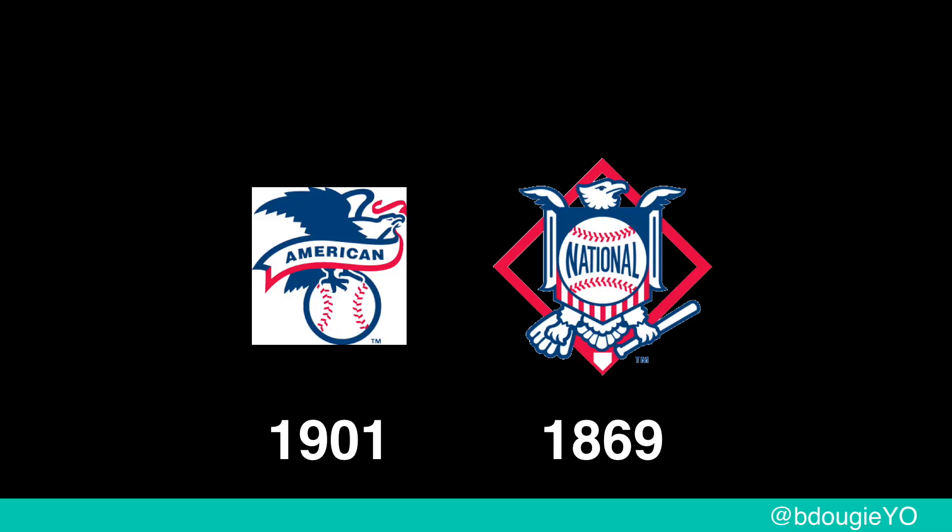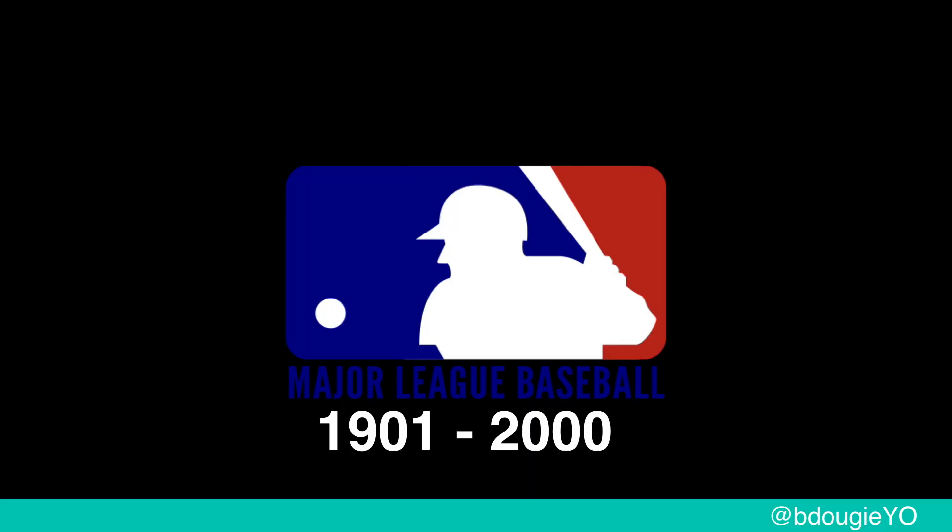So 1846 is when baseball started. Around the early 1900s — 1869 — we had two different leagues: the National League and the American League. These are like two different clubs. Those clubs would play against each other for the championship, the actual National Championship, up until 2000.